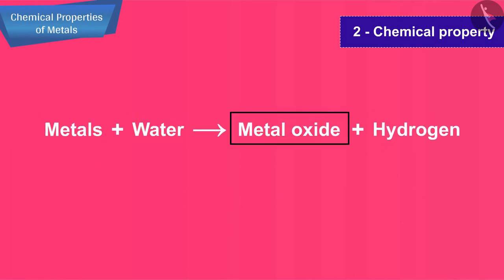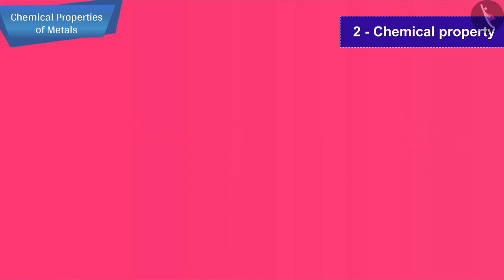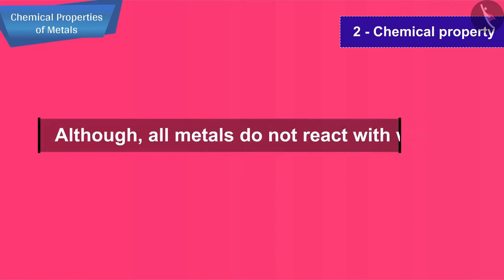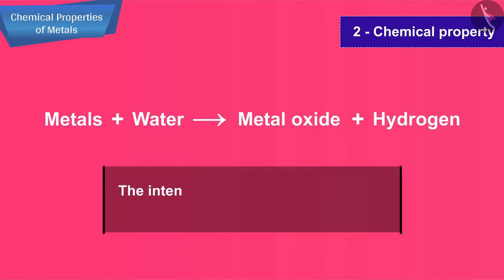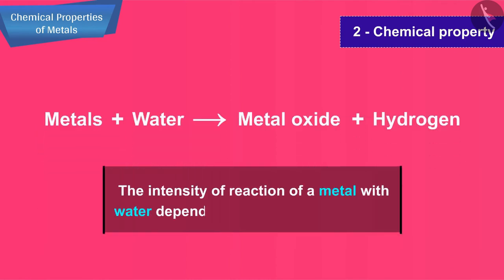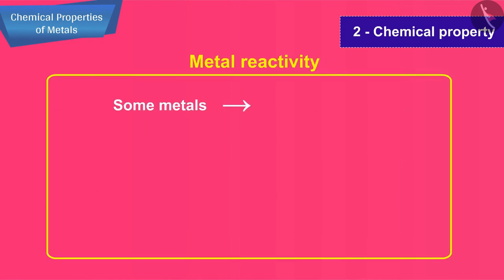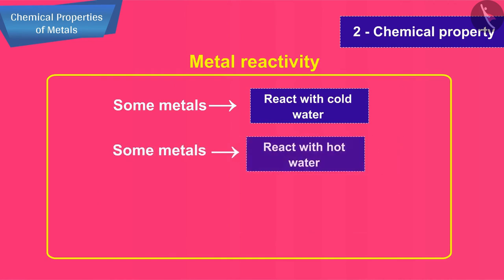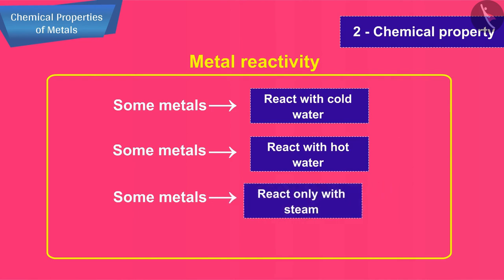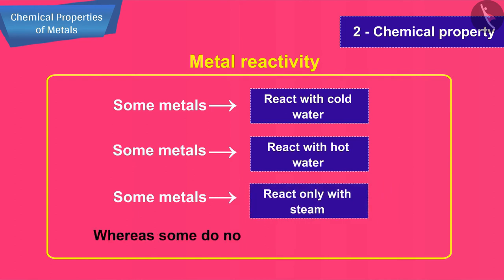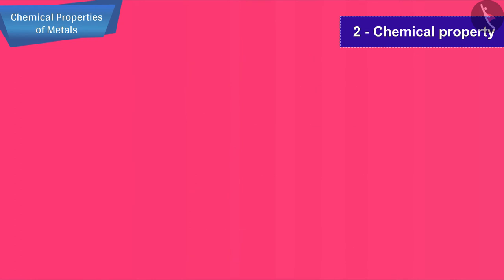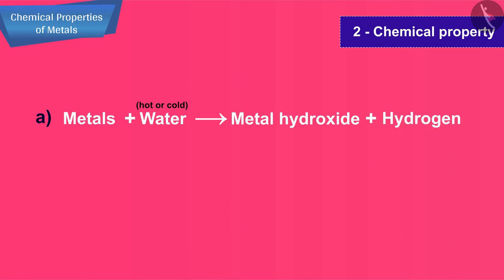Metals react with water to form metal oxide and hydrogen gas, although not all metals react with water. The intensity of reaction depends on chemical reactivity. Some metals react with cold water, some with hot water, and some only with steam, whereas some do not react with steam at all. When a metal reacts with water — hot or cold — the products are metal hydroxide and hydrogen gas.